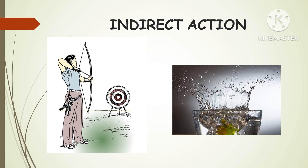Imagine the same archer shooting an arrow into a glass of water sitting next to the target. The arrow shatters the glass, causing water to splash onto the target. The water causes damage to the target indirectly. The archer still represents the ionizing radiations, the arrow still represents the ionizing particle or photon, the glass of water represents the water molecule within the cell, the shattering glass represents the ionization of the water molecule, and the splashing water represents the free radicals created from ionized water.